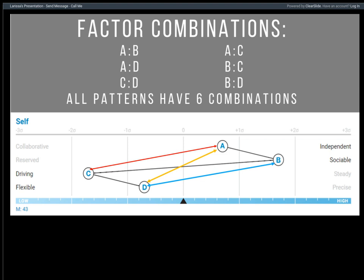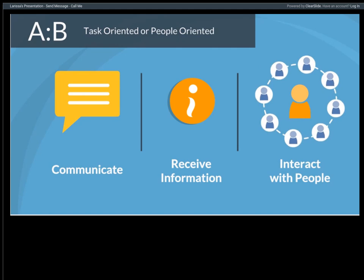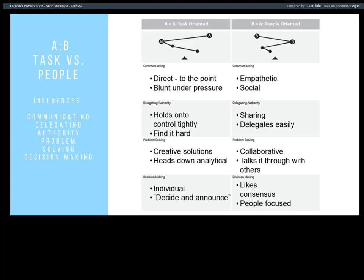We're going to start with the A-B relationship. The A-B is all about whether it's task or people orientation. It's really going to give us an indicator of how we receive and process information, how we communicate that information, and how we interact with people — whether we're more people-oriented and relationship-focused, or more task-oriented and transactional. I'm defining these as if they were crossing that midpoint; they're still true if both are on the same side, just modified a little.